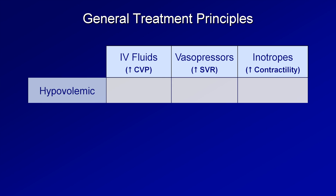In hypovolemic shock, the primary derangement is low CVP, so IV fluids are the cornerstone of therapy. If the patient is profoundly hypotensive, vasopressors are sometimes used temporarily, but only while definitive access is obtained and fluids are pushed in as quickly as possible. If a patient in hypovolemic shock is requiring vasopressors to maintain perfusion pressure, they are in critical need of more fluid. Since these patients are already extremely hyperdynamic, there is no benefit to inotropes, which will only risk worsening tachycardia to the point that diastolic filling time is too short for the LV to fill even with a meager amount of fluid available.